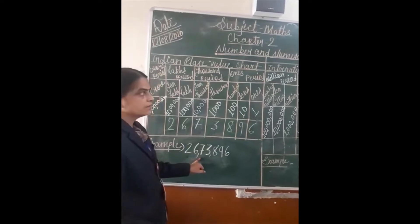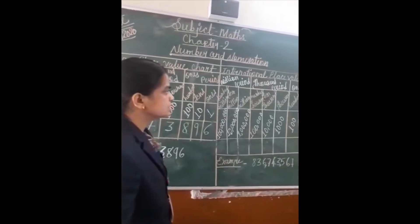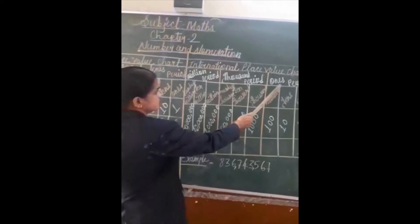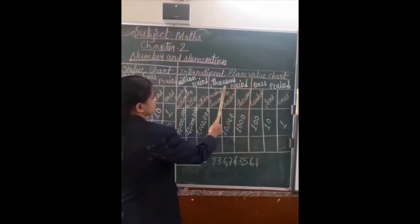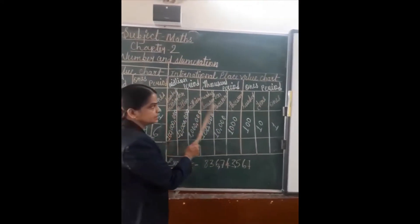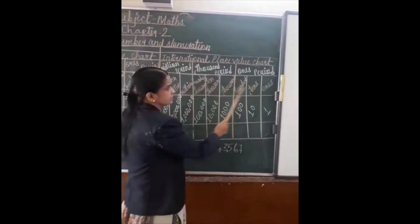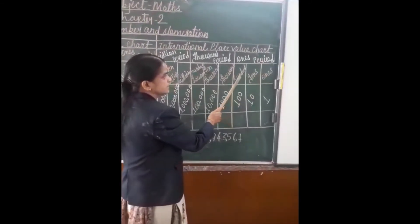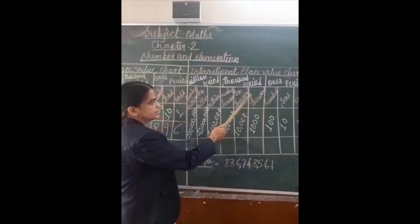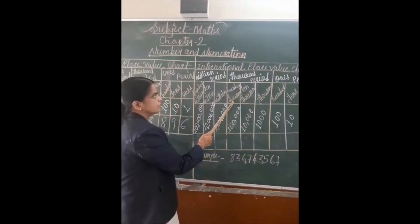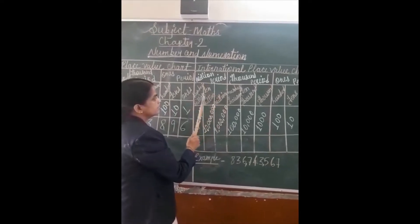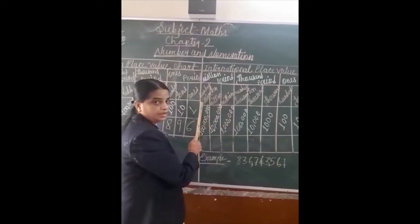Now we will take the example of the international place value chart. Here, three periods are there: ones period, thousands period, and millions period. In each period, three columns are there. Ones period has ones, tens, hundreds. Thousands period has thousands, ten thousands, hundred thousands. Millions period has millions, ten millions, and hundred millions.